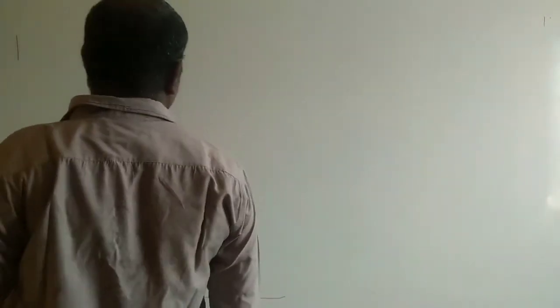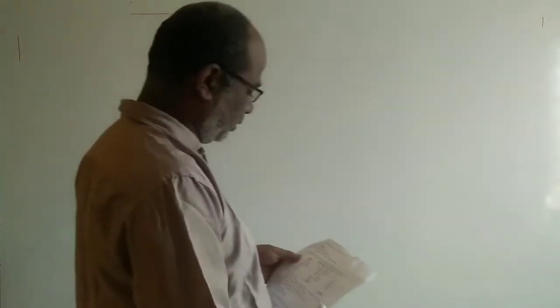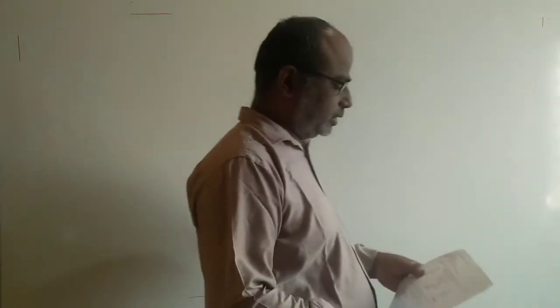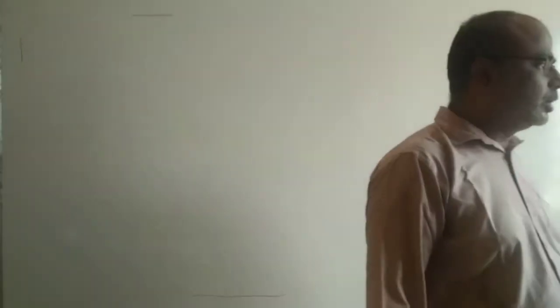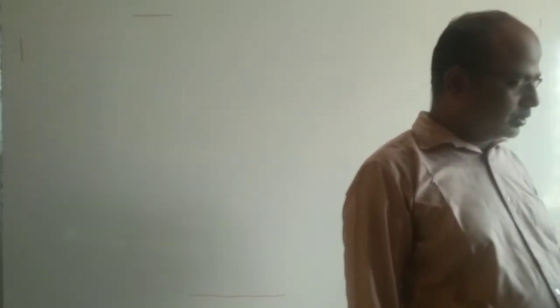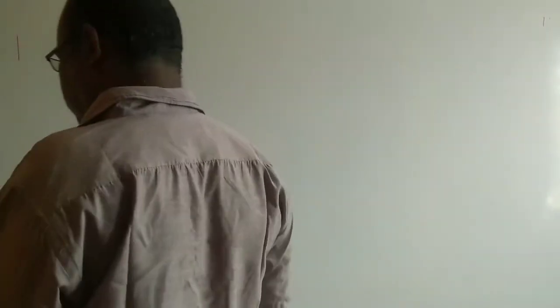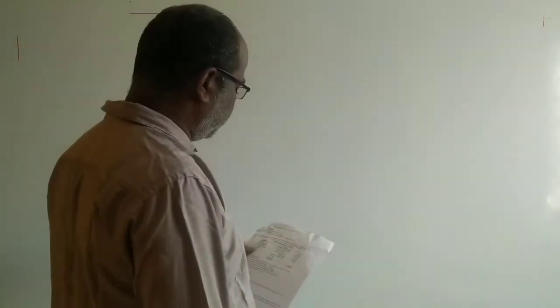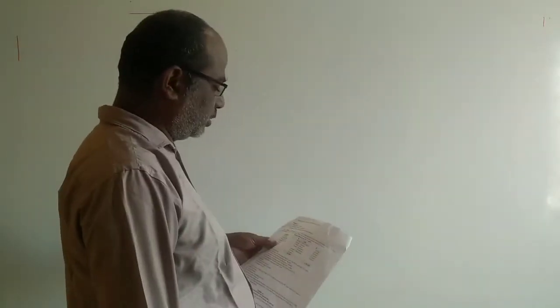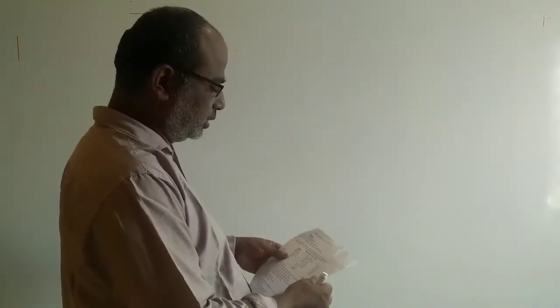Welcome students. This is the first segment of the accounting session. In the last session we solved problem number 30. Now the last problem is problem number 31, based on the resolution of a partnership firm. The question is given as: Shruti, Shilpa and Shreya were partners in a firm sharing profits and losses in the ratio of 2:2:1.